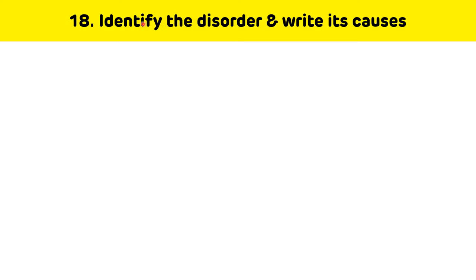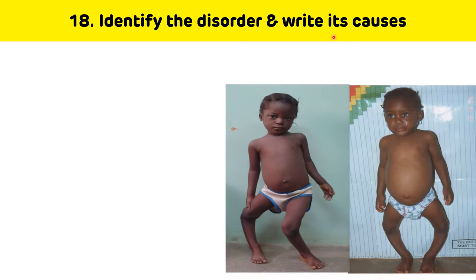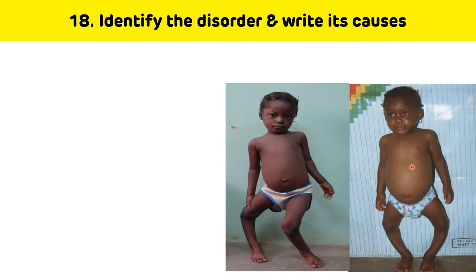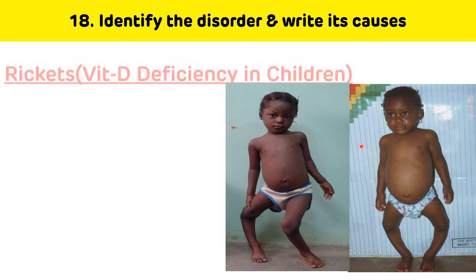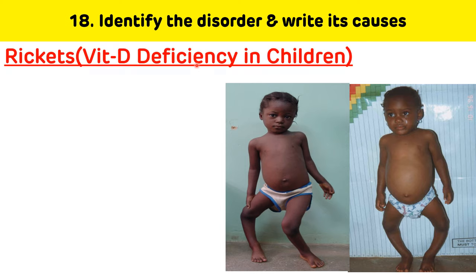Next question: identify the disorder and write its causes. This condition is called rickets in children, and it occurs due to vitamin D deficiency. As you can see, there is bow-legged appearance, knock knees, and pigeon-like chest. Vitamin D is a fat-soluble vitamin.